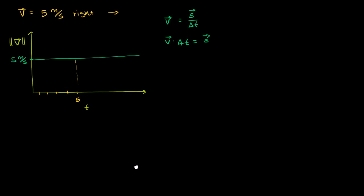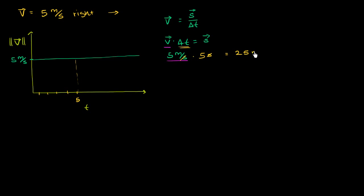So what was the displacement over here? If you multiply both sides by change in time, you get velocity times change in time equals displacement. I know the velocity is 5 meters per second, and the change in time is 5 seconds. The seconds cancel out, and you get 5 times 5 — 25 meters. And that's pretty straightforward.